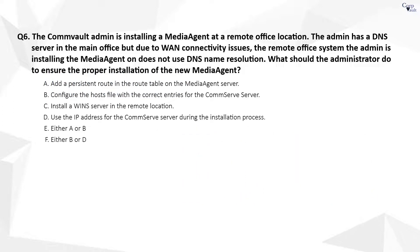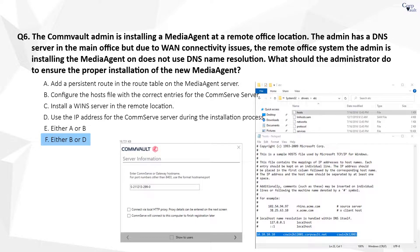Question 6. The correct answer is B or D. You can either edit the host's file with the entries of the CommServe, or use the IP address of the CommServe during the install. We personally think editing the host file is the best option.